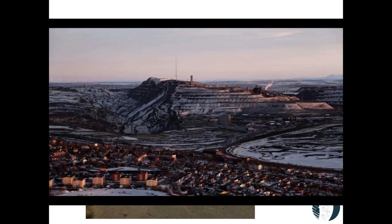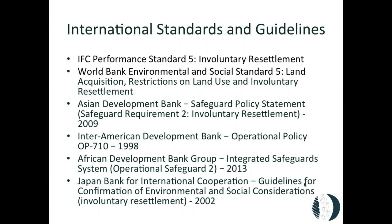The primary principles come from international standards and guidelines. A key standard is the IFC Performance Standard No. 5 on involuntary resettlement, which we'll be referencing most today. Recently the World Bank brought out their Environmental and Social Standard No. 5 on resettlement. There's also the Asian Development Bank, the Inter-American Development Bank, the African Development Bank, and the Japan Bank for International Cooperation, among others, who have guidelines and standards on involuntary resettlement.